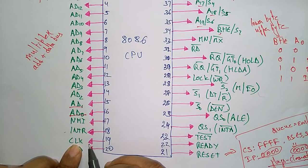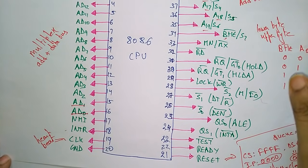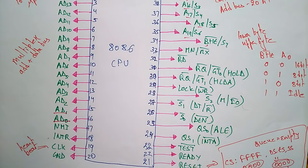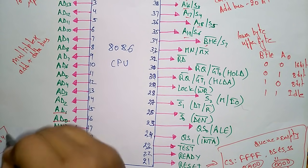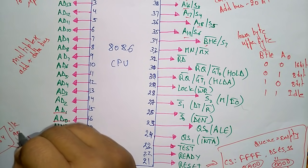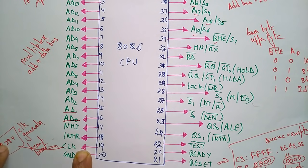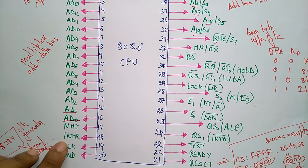The CLOCK pin is the heartbeat of the CPU — needed for event synchronization and driving the CPU. It is an input signal connected to the 8284 clock generator, which sends clock signals to the processor so it can perform operations in synchronization.